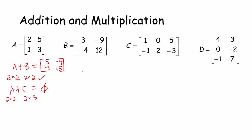Let's do A times B — matrix multiplication is a trickier definition. Take the entire first row of matrix A and match it with the first column of matrix B: multiply 2×3, 5×(−4), and add them together. Since this is first row times first column, the result goes in position (1,1). For position (1,2): take the first row times the second column — 2×(−9) plus 5×12.